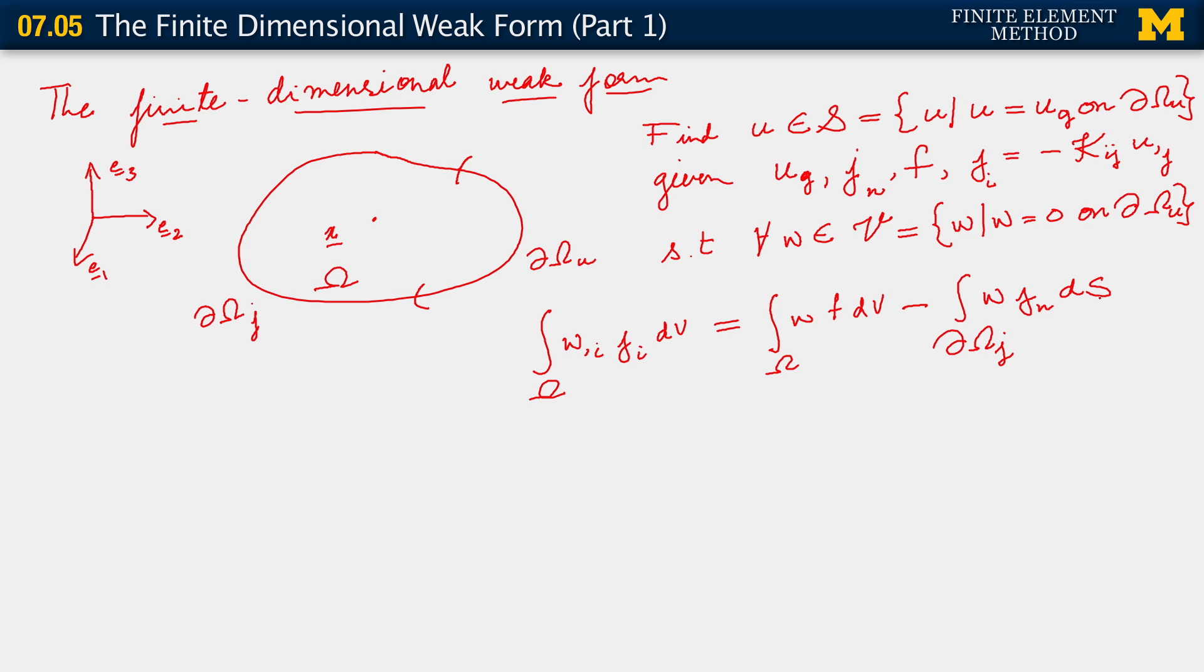weak form. And as we made the observation in the case of the 1D problem, that does not make it any easier to solve than the strong form. It bears complete equivalence to the strong form, and so we really haven't made any steps towards making it easier for us to solve or towards developing approximations. And just as before, we develop approximations by going to a finite dimensional form. So the finite dimensional form is the following.